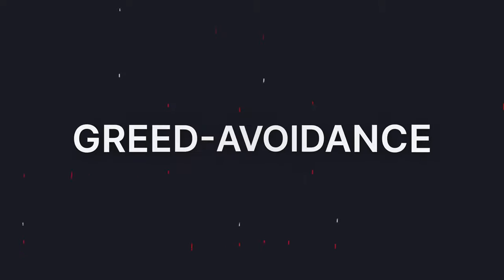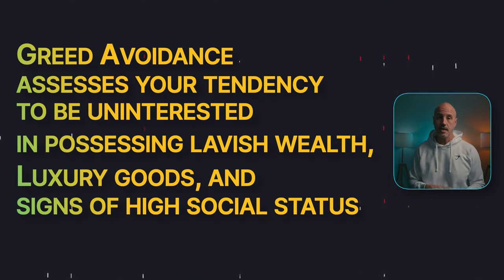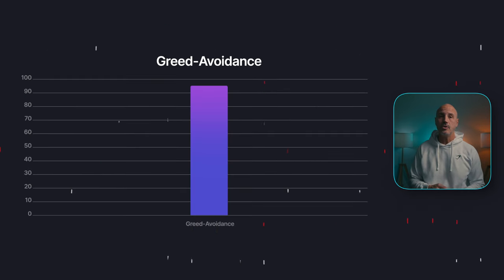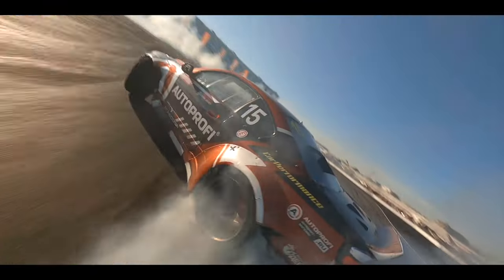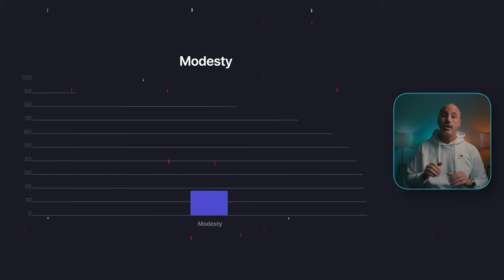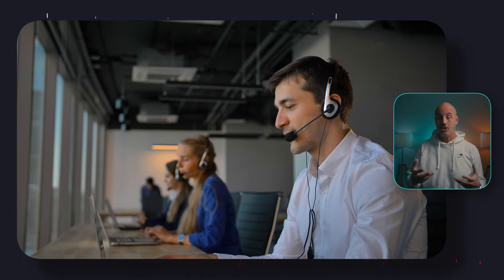Greed avoidance assesses your tendency to be uninterested in possessing lavish wealth, luxury goods, and signs of high social status. If you are low in greed avoidance, you will want to enjoy and display your wealth and privileges, but if you're high you will not be especially motivated by monetary or social status considerations. Modesty assesses your tendency to be modest and unassuming — if you're low you will consider yourself superior and entitled to privileges others do not have, but if you're high you will see yourself as an ordinary person without claiming special treatment.